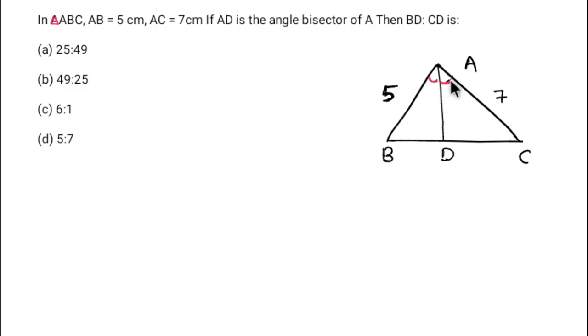We need to find the ratio BD:CD. What is BD over CD? How do we find this ratio?